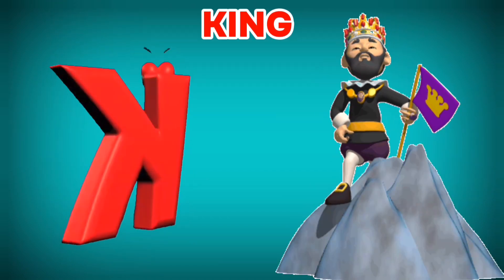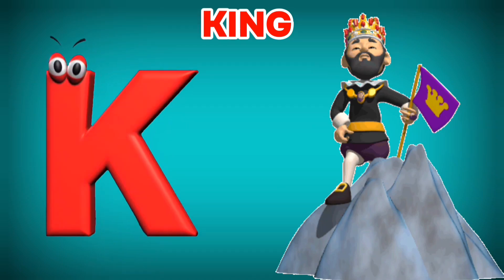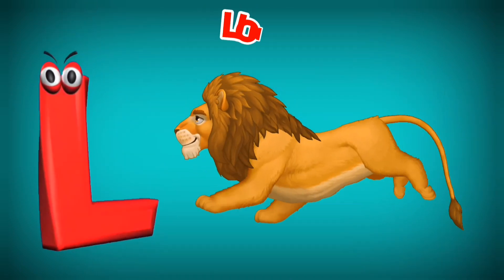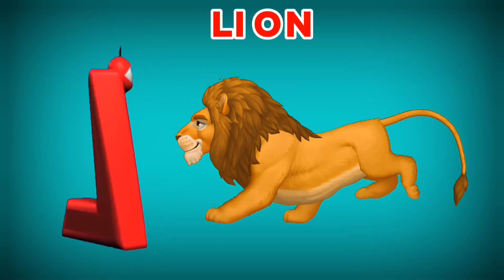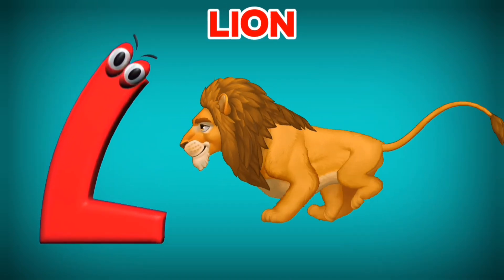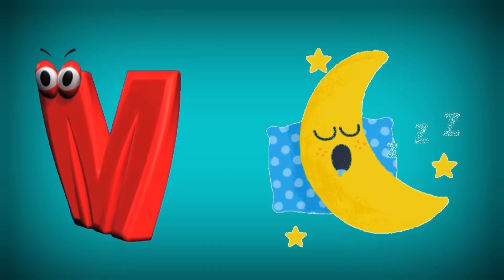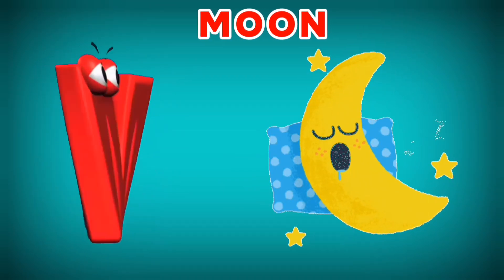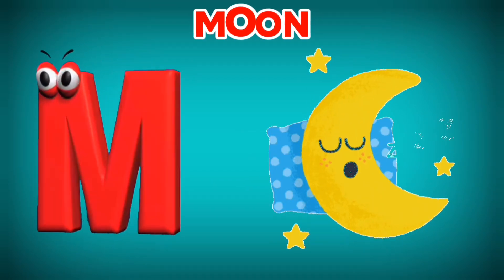K is for King. K, K. King. L is for Lion. L, L. Lion. M is for Moon. M, M. Moon.